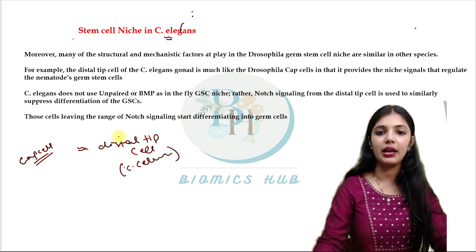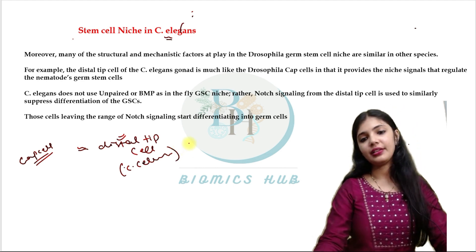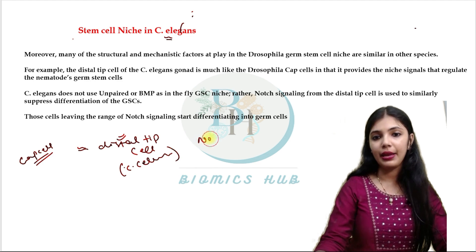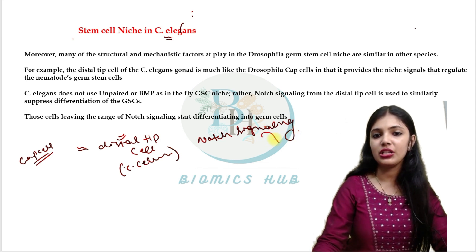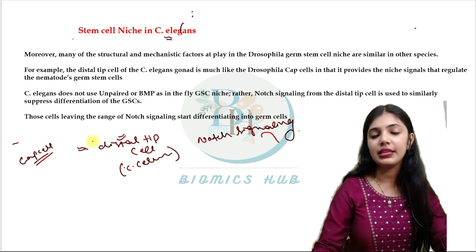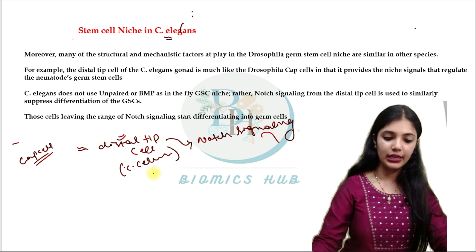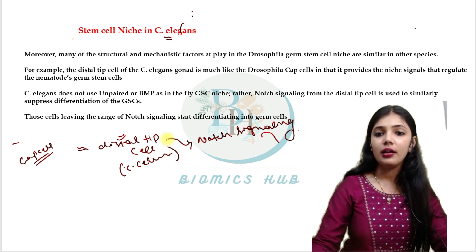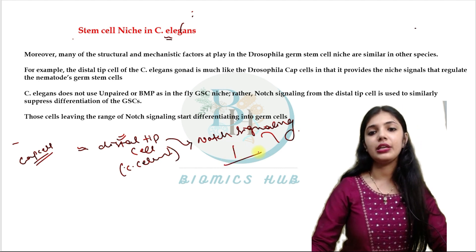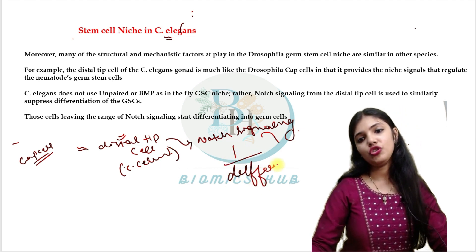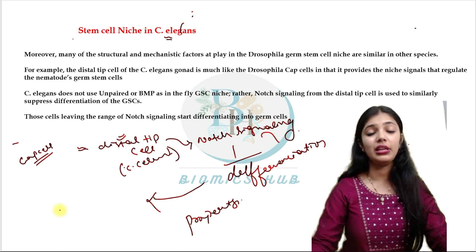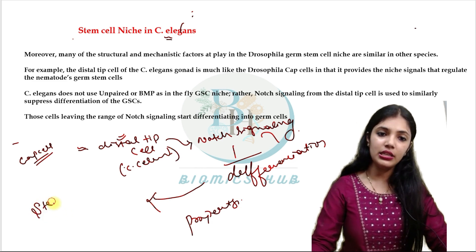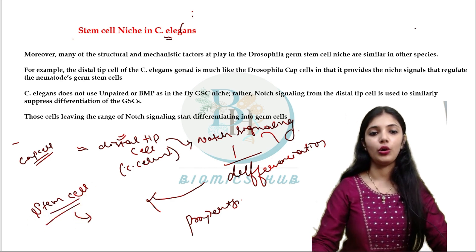In C. elegans, we have the distal tip cell. Here, paracrine factors are not working; instead, Notch signaling is working. The distal tip cell provides factors for activating Notch signaling. The function of Notch signaling is to inhibit differentiation — when it inhibits the differentiation property, it allows the cell to remain in stem cell form, so differentiation does not occur.